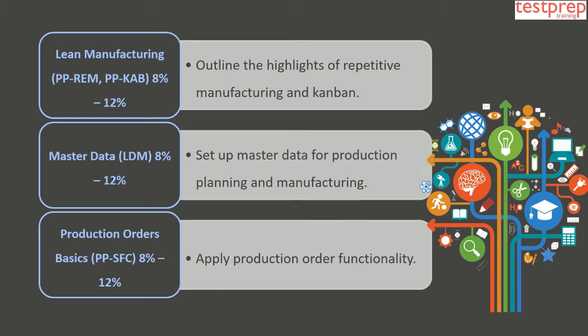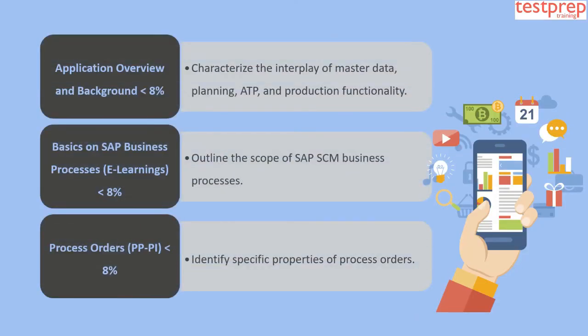Domain 6 is Production Orders Basics PP-SFC, comprising 8 to 12 percent of the exam, applying production order functionality. Domain 7 is Application Overview and Background, comprising less than 8 percent, characterizing the interplay of master data, planning, ATP, and production functionality.